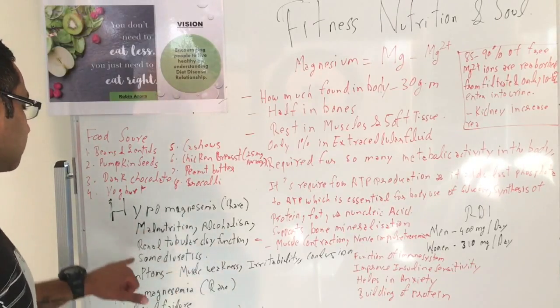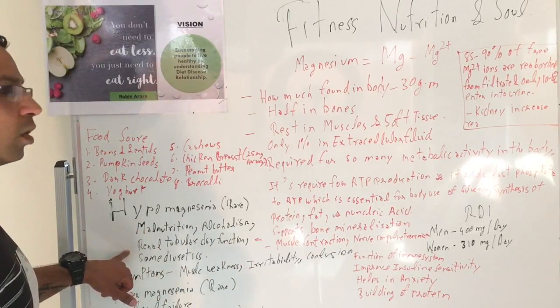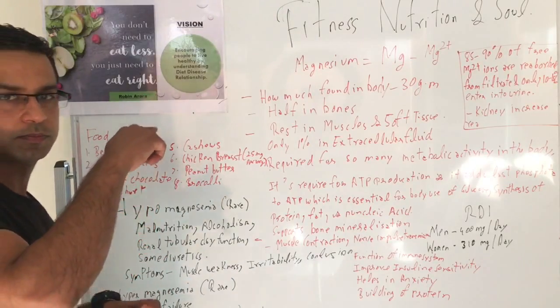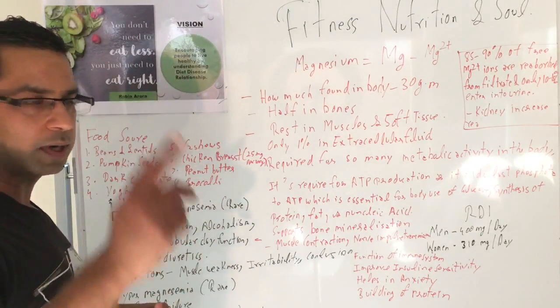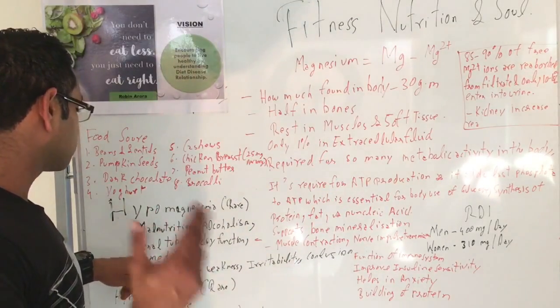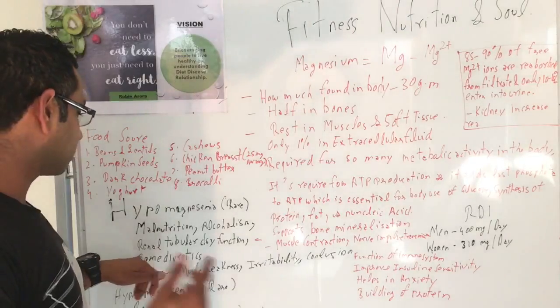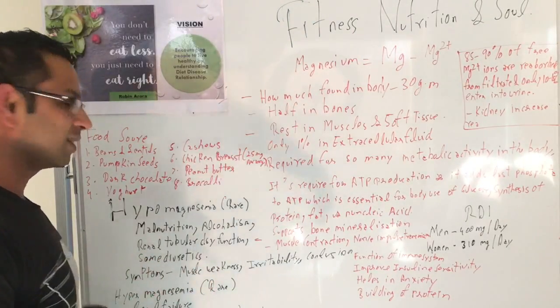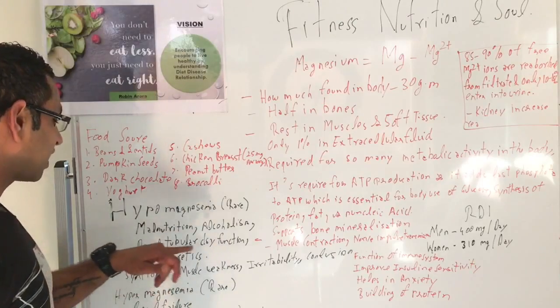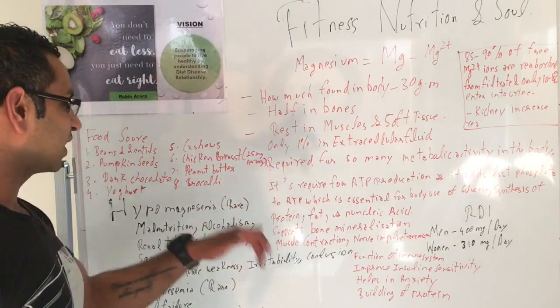Renal is the kidney, and the tubule is the tube where waste gets excreted and reabsorption of water and ions happens, and also some diuretics. So that's hypomagnesemia. The symptoms are muscle weakness, irritability, and convulsions.